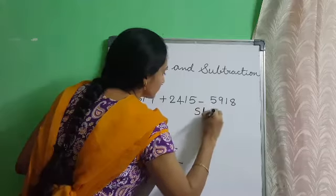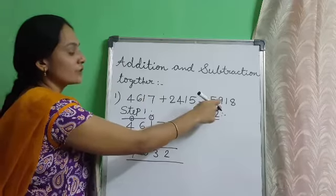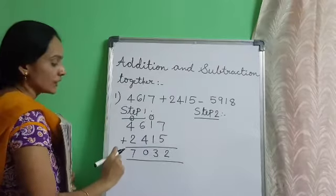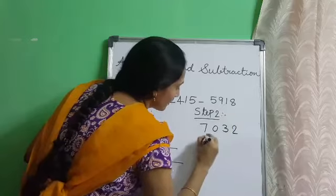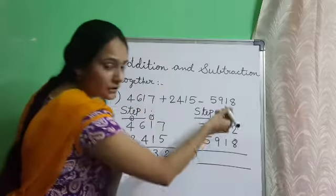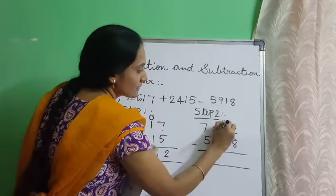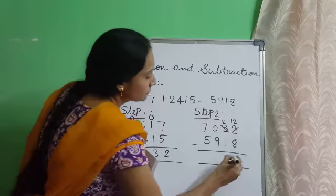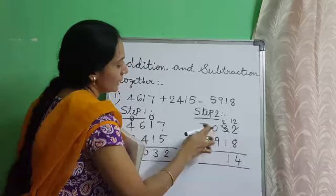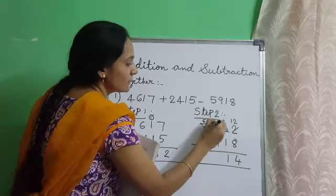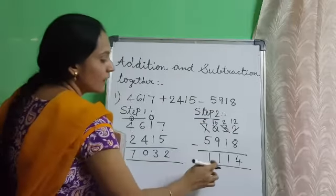Now start step 2: subtract the third number 5918 from the sum of the first two numbers, 7032. 8 ones cannot be subtracted from 2 ones, so we borrow one from the tens place. 3 minus 1 is 2, and this 2 becomes 12. 12 minus 8 is 4. 2 minus 1 is 1. 9 hundreds cannot be subtracted from 0, so we borrow from the thousands place. 7 minus 9 gives 6, and 0 becomes 10. 10 minus 9 is 1, and 6 minus 5 is 1. By subtracting, we get the answer 1114.